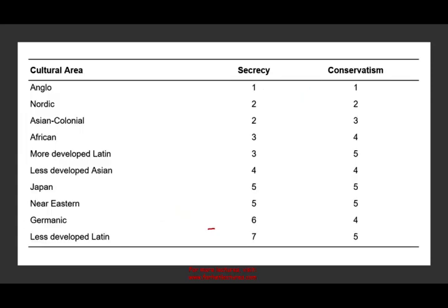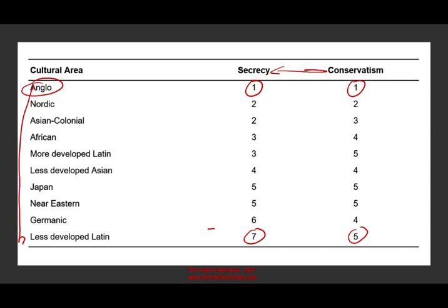Here is another ranking. The Anglo countries — the U.S., the U.K., Canada, New Zealand, Australia — are low on secrecy and low on conservatism. If you are low on secrecy, you tend to be low on conservatism as well. At the other extreme, less developed Latin countries like Colombia and Mexico are high on secrecy and more conservative. Japan is high on secrecy, but not as high as Latin America, and high on conservatism. Nordic countries like Sweden and Norway are low on secrecy and low on conservatism.